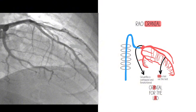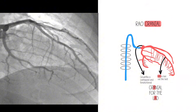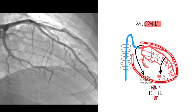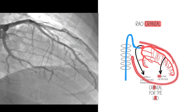Just to recap from other videos: how do you know that this is RAO? There are two ways. The first way is the spine — the spine is on your left hand side of the image, that is RAO. Versus if it was on the right hand side of the image, it would be LAO. The other way is by the outline of the heart shadow, which definitely looks like RAO — we use that for our LV grams, not this oblong LAO shape.